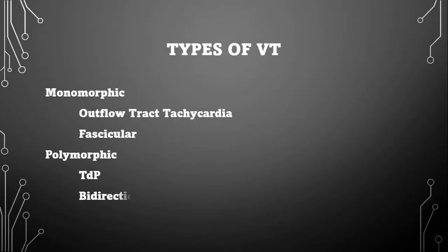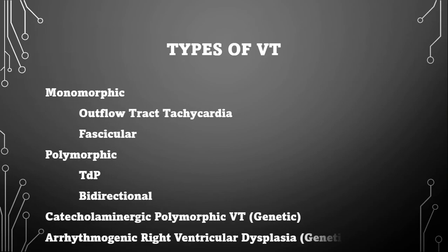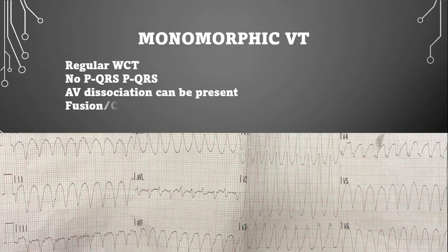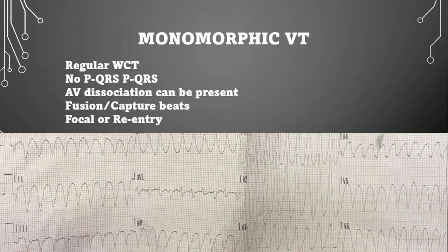Here are the various types of VTAC. We have monomorphic VTAC, which encompasses outflow tract tachycardias and fascicular VTACs. We also have polymorphic VTAC, which includes torsades de pointes, and bidirectional VTAC. And we finally have our genetic causes. Monomorphic VTAC is a regular wide complex tachycardia, usually over 130 beats per minute. I personally use 130 because I don't want to treat patients with accelerated idioventricular rhythms. There is no PQRS-PQRS pattern, but there can be AV dissociation. You can also see fusion or capture beats.